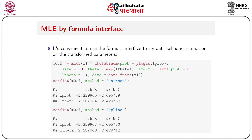It is convenient to use the formula interface to try out likelihood estimates on transformed parameters. For example: `m0cf = mle2(x1 ~ dbetabinom(prob = plogis(lprob), size = 50, theta = exp(ltheta)), start = list(lprob = 0, ltheta = 2), data = data.frame(x1))`. Then `confint(m0cf, method = 'uniroot')` and `confint(m0cf, method = 'spline')` both give 95% confidence intervals of the estimates on the transformed scale.